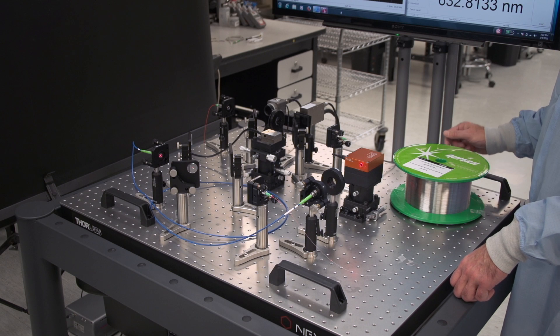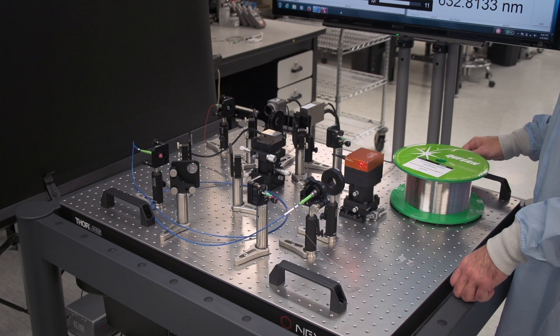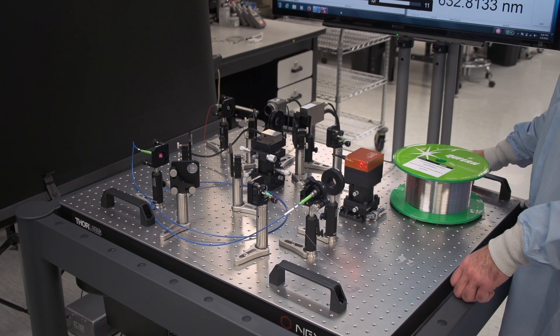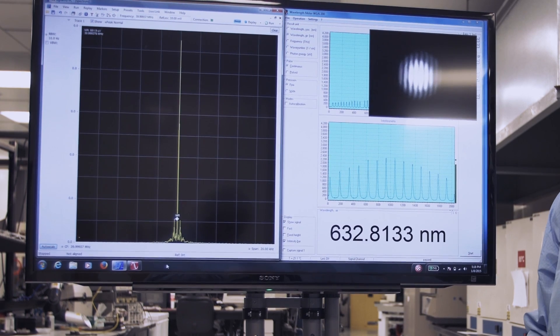The frequency-shifted beam and the beam passing through the fiber beat on the detector to produce a beat signal that is analyzed by an RF spectrum analyzer, whose output is displayed here in this window.